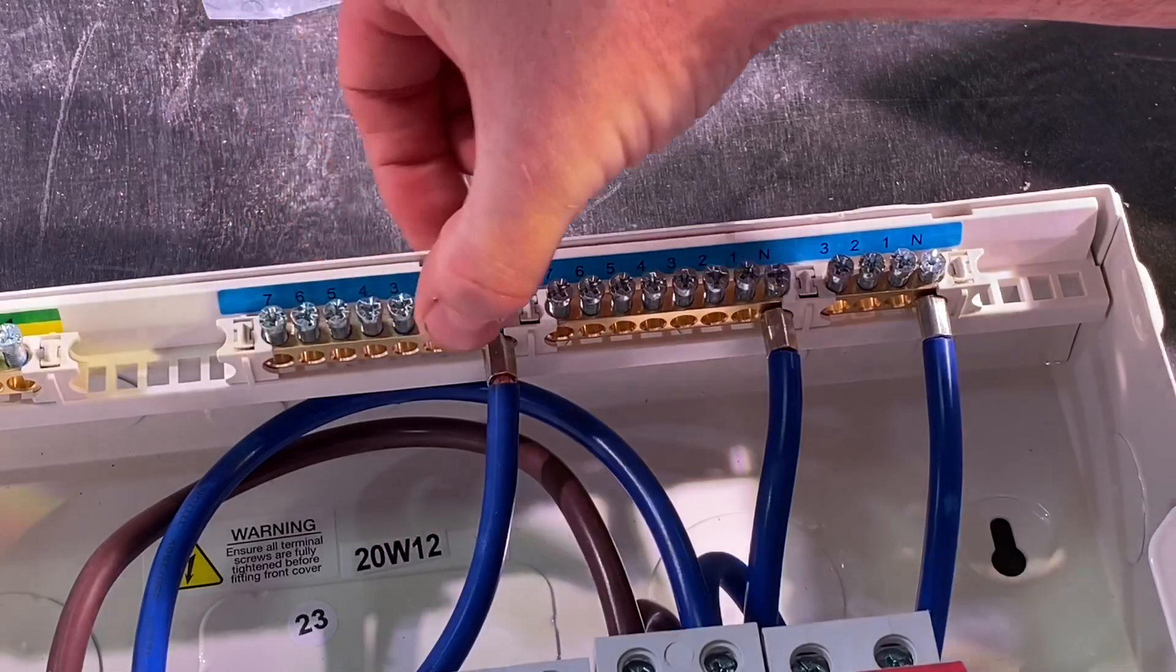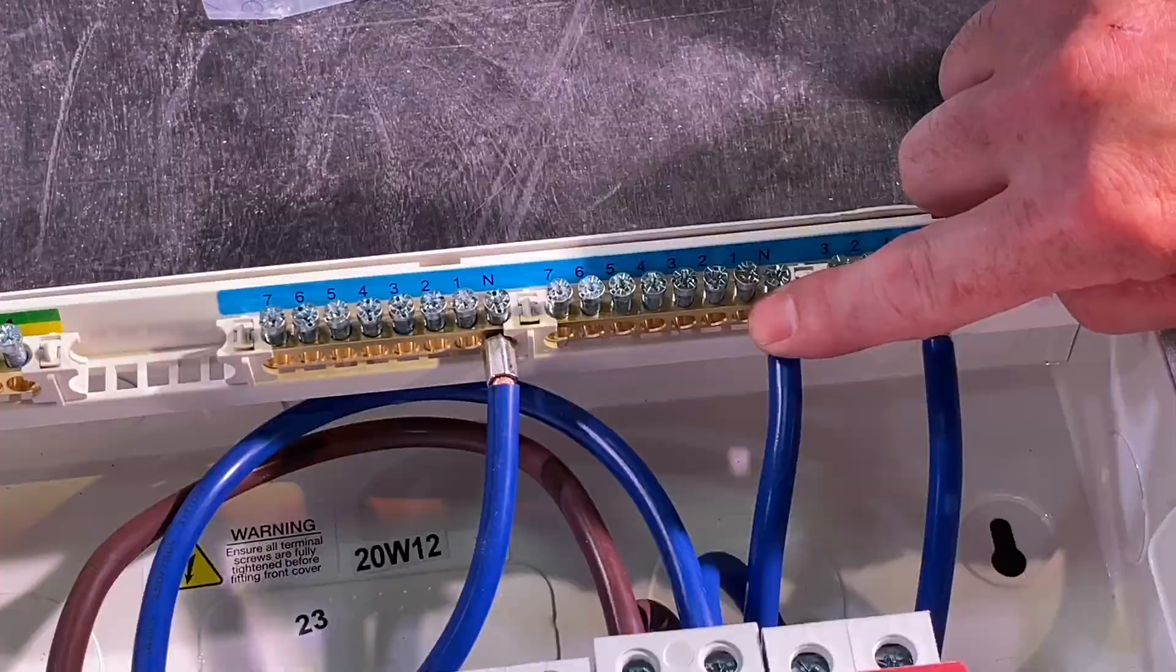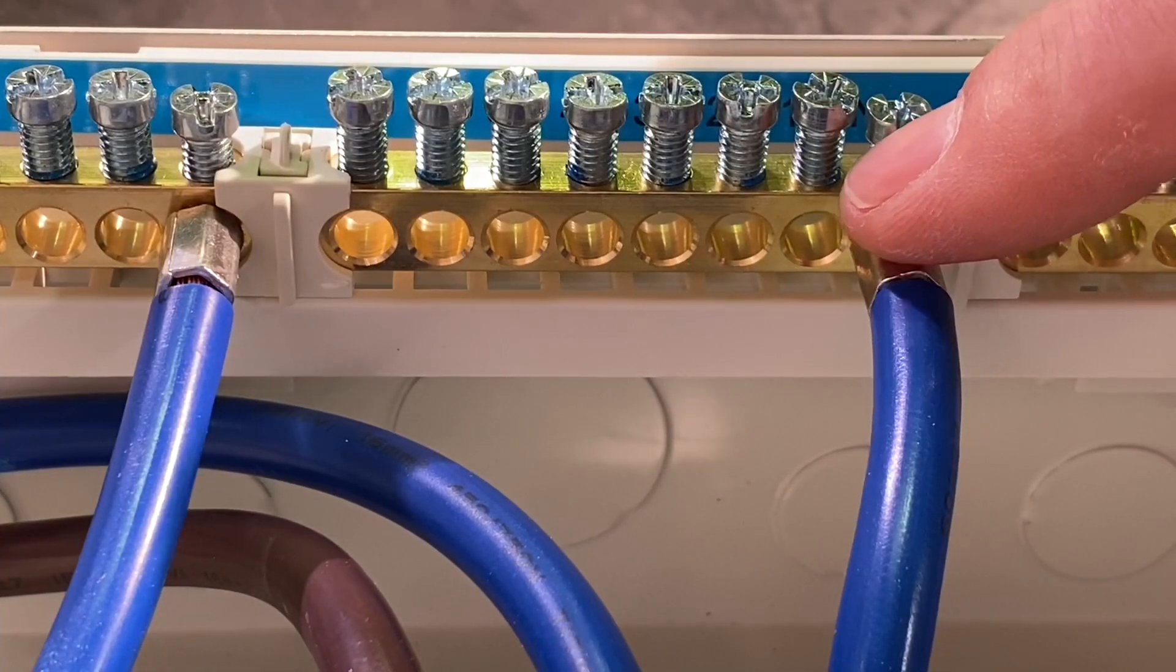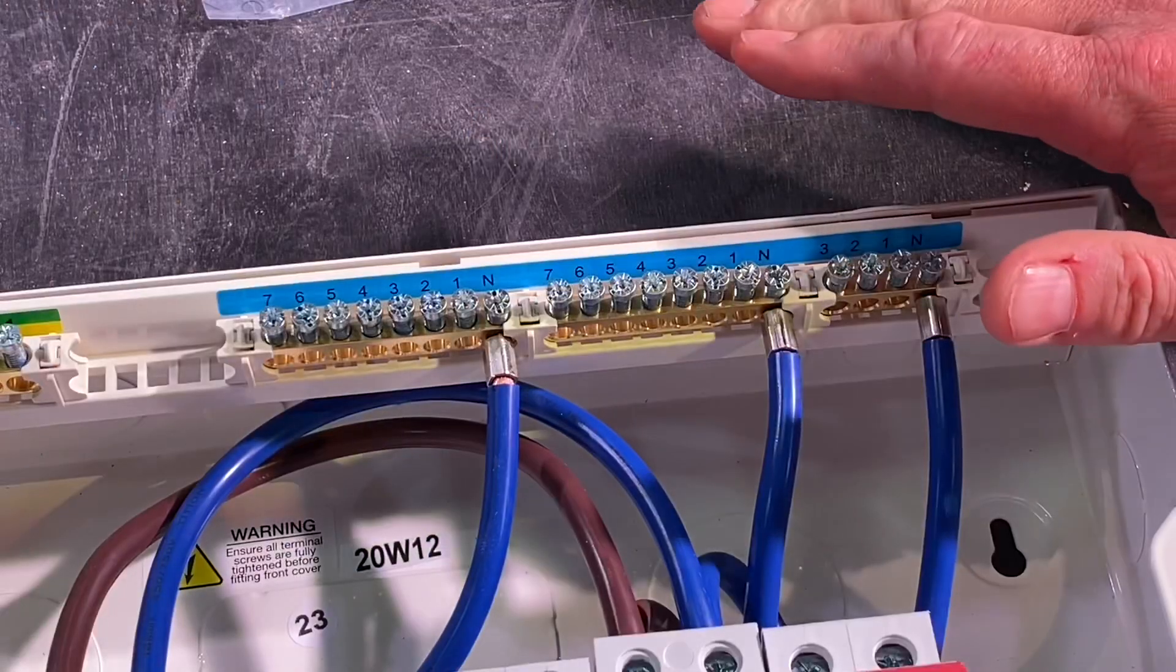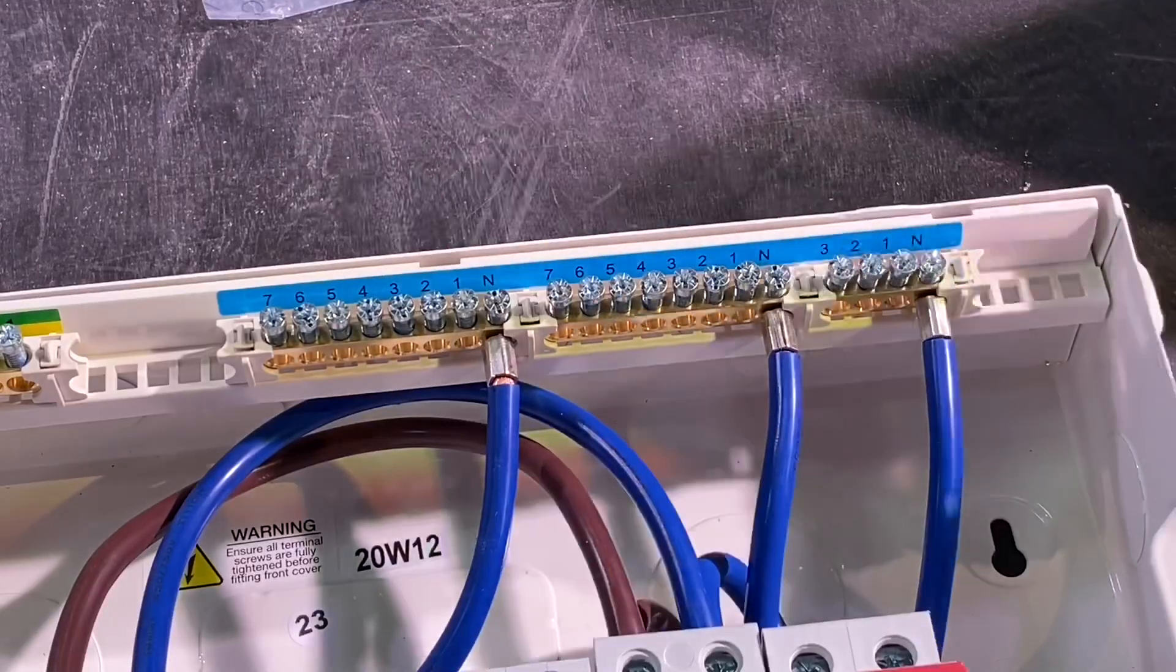All of the terminals, whether they be for the neutral bars or the earth bars, have a generous size hole. That hole is there to facilitate the cables, but also it says in the specification, allowing you to ferrule the ends as well. And you know how we like a ferrule at eFix.